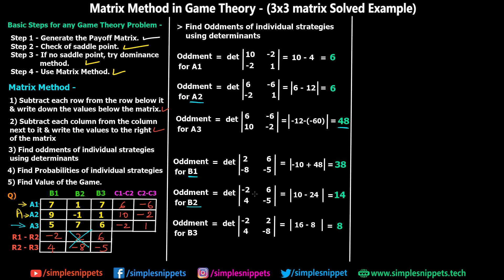For B2, since we have a mod sign, even though (−2 × −5) − (6 × 4) = 10 − 24 = −14, we take the absolute value and write 14. For the last strategy B3, we exclude the third column and take −2, 2, 4, and −8. Calculating the determinant gives 8. So all individual oddments are now calculated: B1 = 38, B2 = 14, B3 = 8.